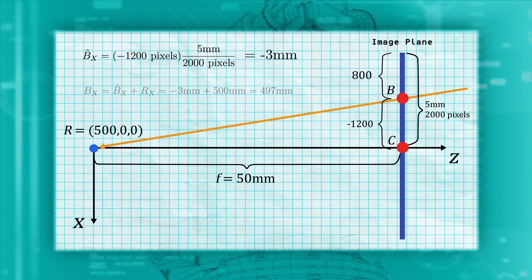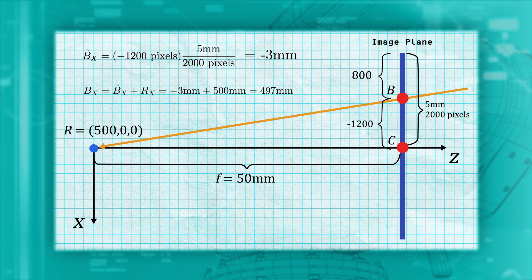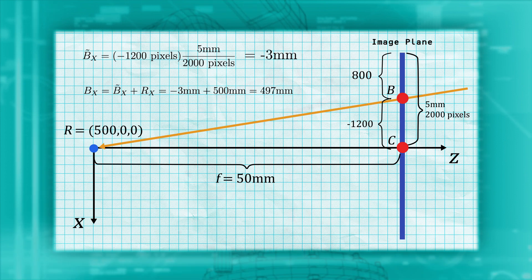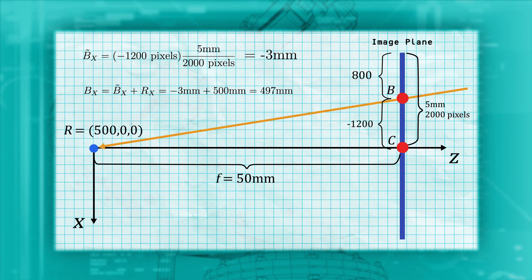However, remember that the origin is centered at the left camera center, so the true X position is 500 millimeters to the right, or at 497 millimeters.